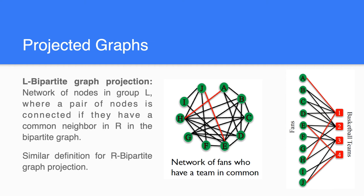Now we are going to talk about bipartite graph projection. The bipartite graph projection is divided into two parts: the L or U bipartite graph projection, and the R bipartite graph projection.